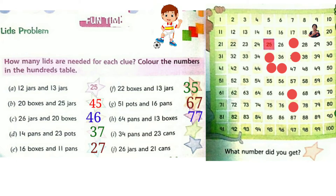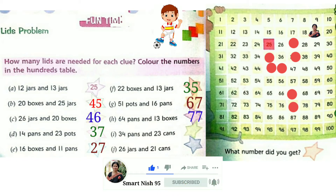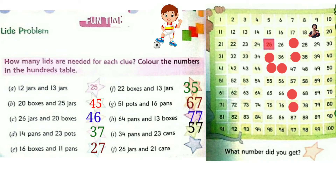Now question I: 34 pans and 23 cans. 34 plus 23. In the 1's place: 4 and 3, 4 plus 3 is 7. And in the 10's place: 3 plus 2 is 5. The answer is 57. 34 plus 23 is 57. Colour 57 in the 100's table.